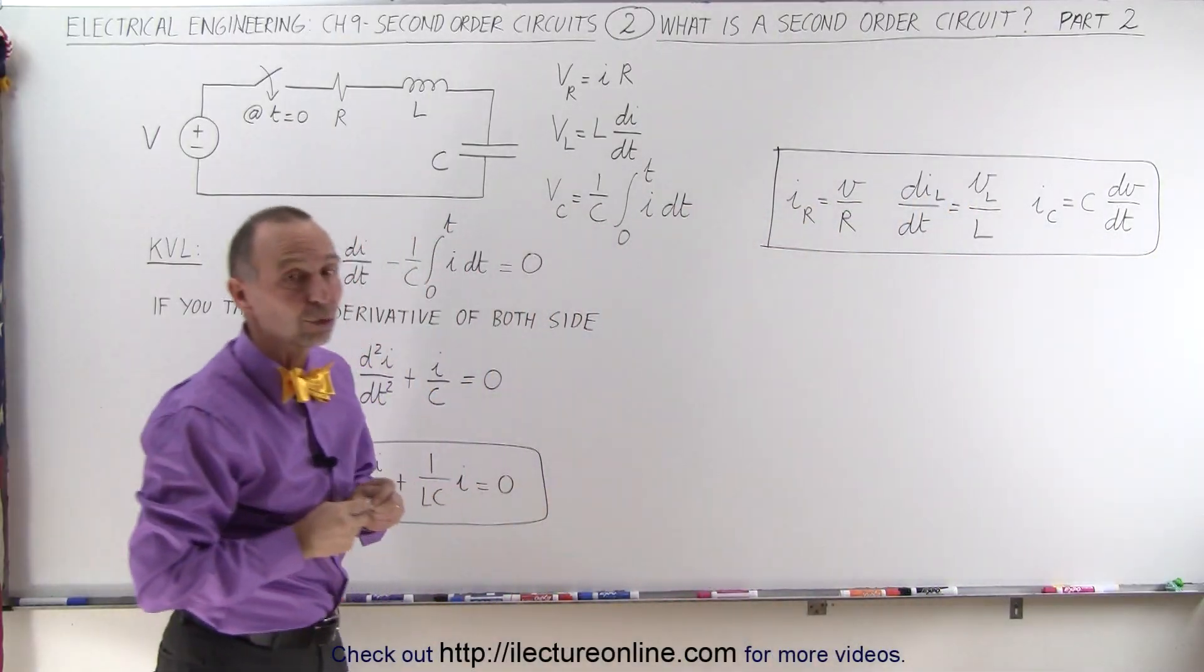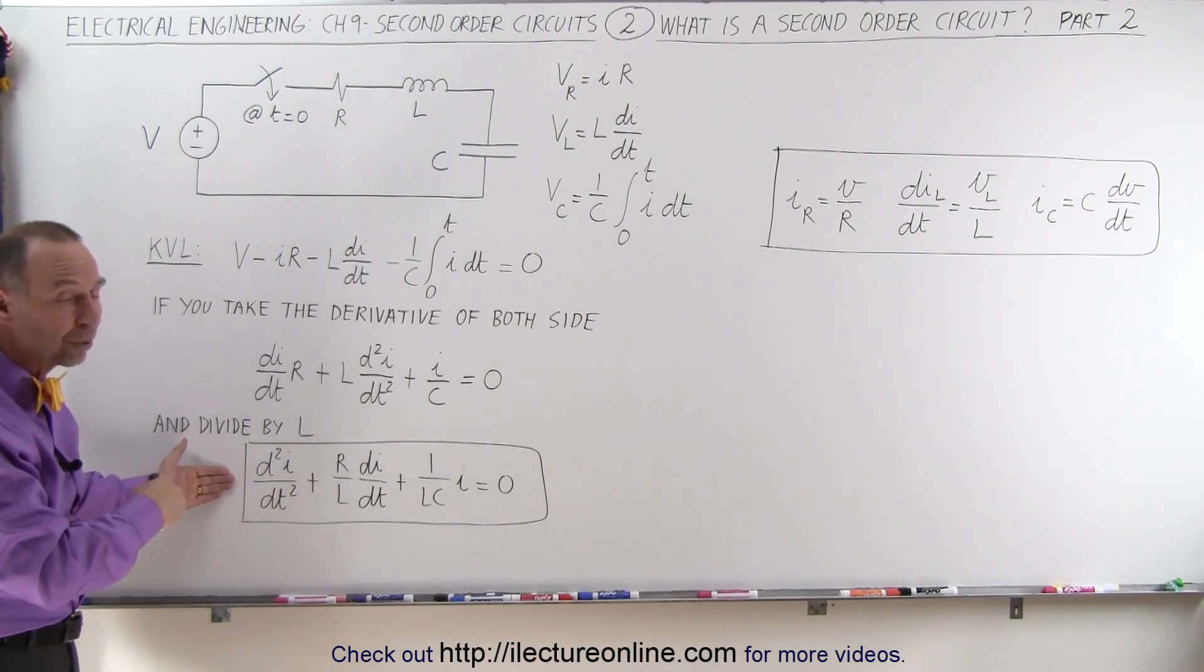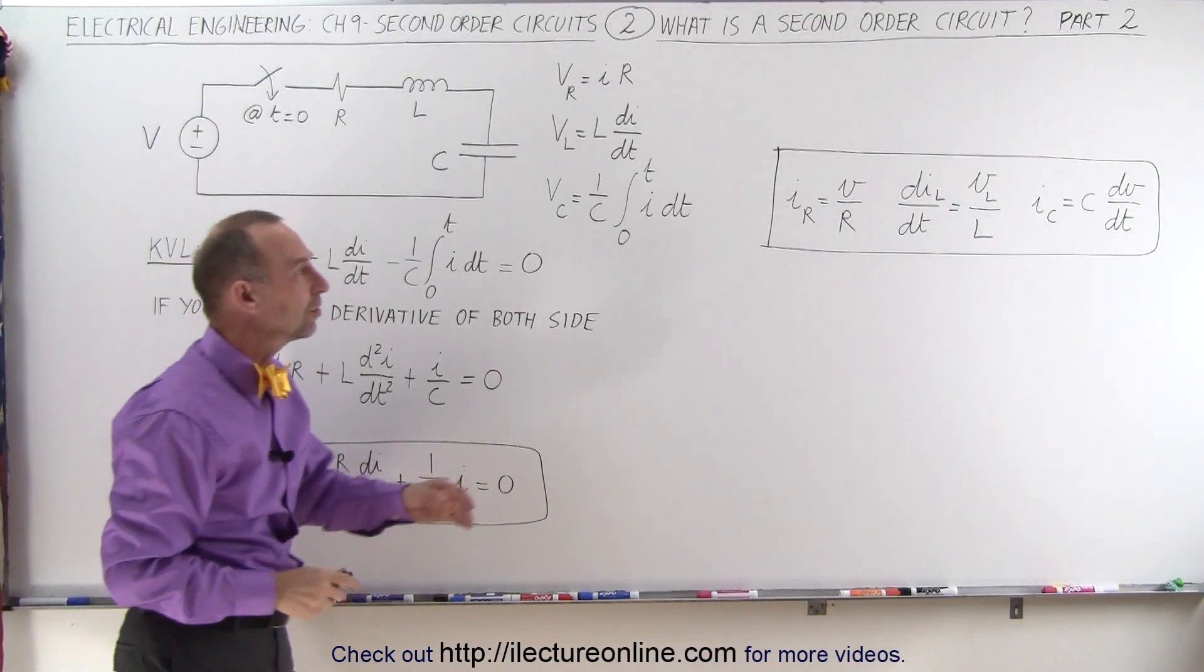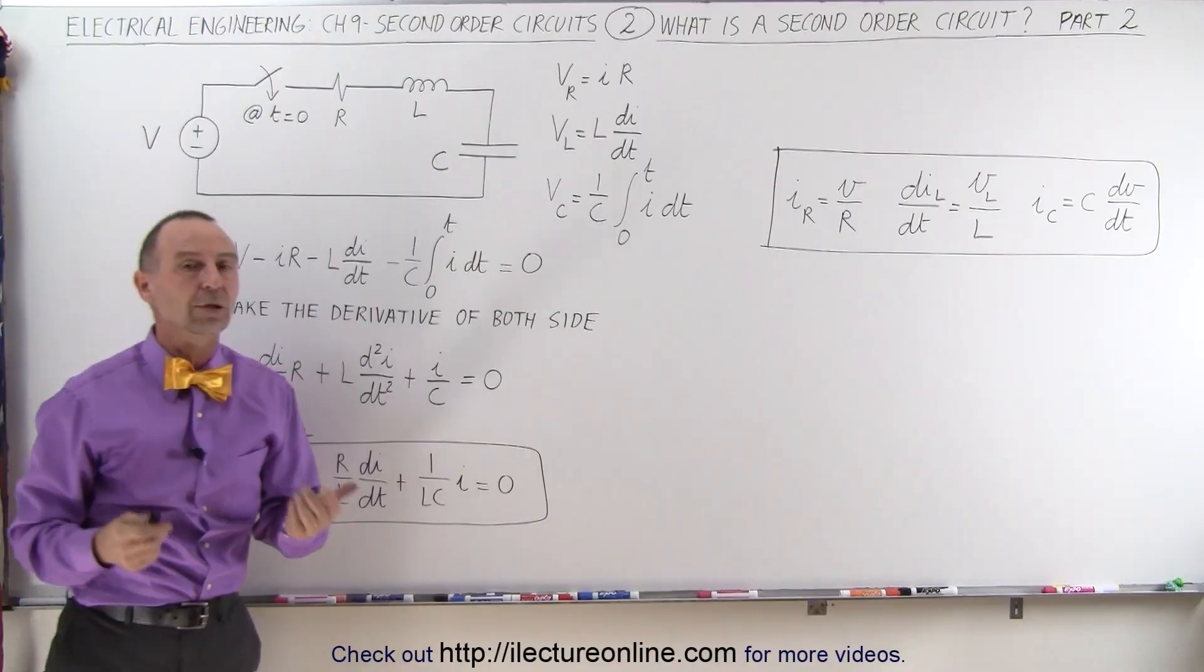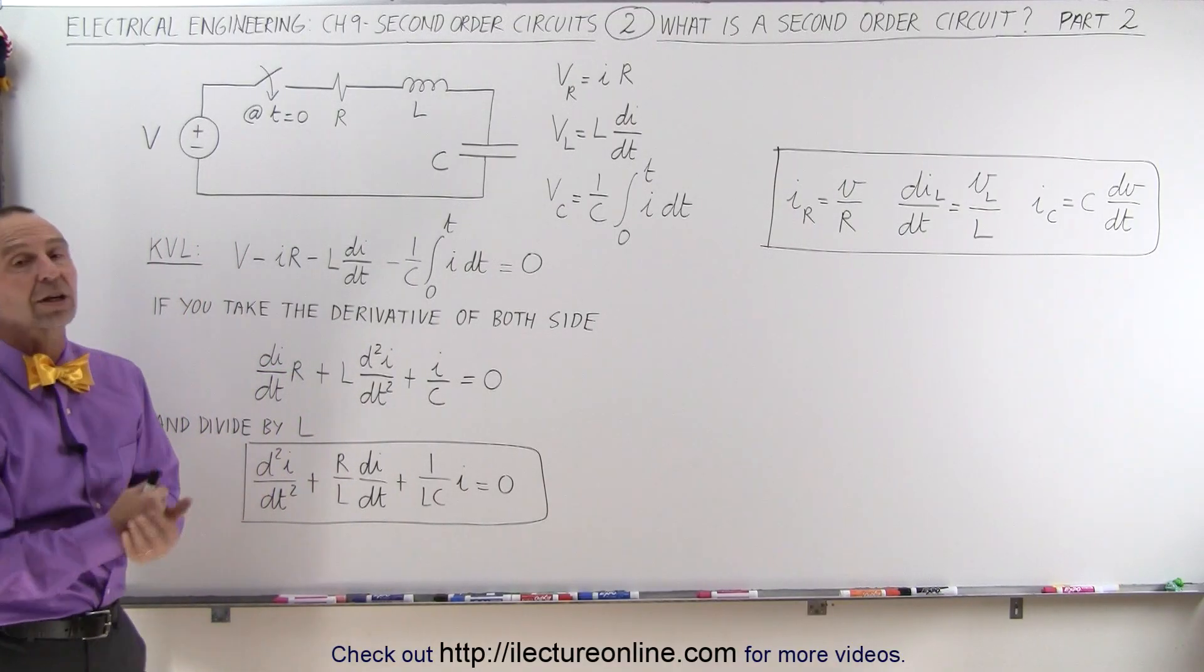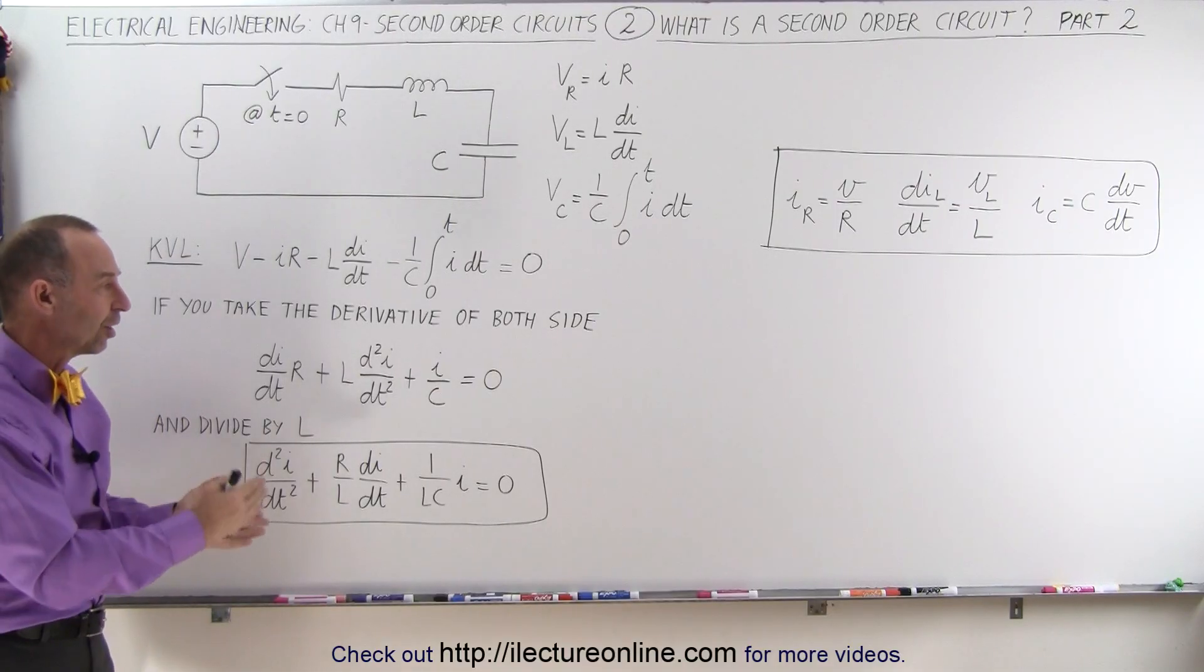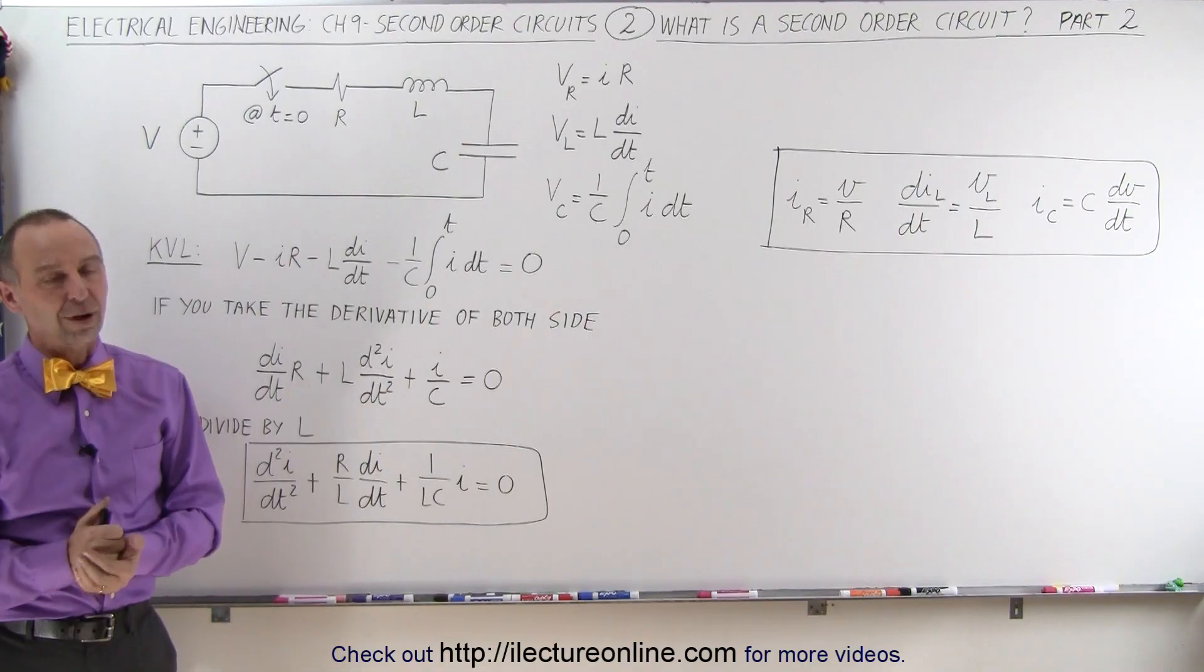We're going to need all of these in the future videos to try and solve these second order circuits. So this is the equation we're going to end up with. We're going to study this equation in more detail in the future in this series, and we're going to use these kind of relationships between the current and the voltage in the three different devices in the second order circuit to help solve the second order circuit. So that's where we start. This defines what second order circuits are. Now let's go solve some of them.